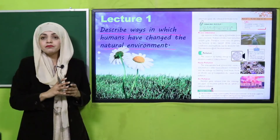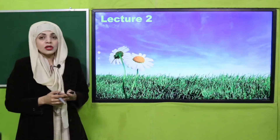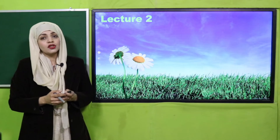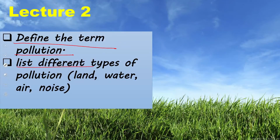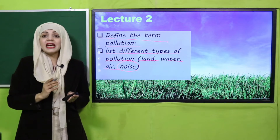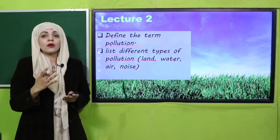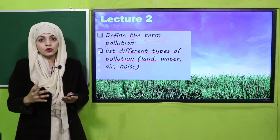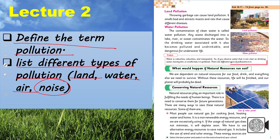Then we will move towards lecture number two. By the end of lecture two, all the students will be able to define the term pollution and list different types of pollution — like land, water, air, and noise pollution. Students will be able to identify and list down each type. The pages included are page number 29 and page number 30.